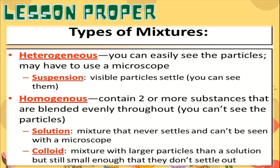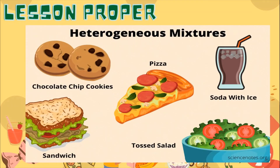Here are examples of heterogeneous mixtures: chocolate chip cookies, pizza, soda with ice like Coke with ice, sandwich, and tossed salad.